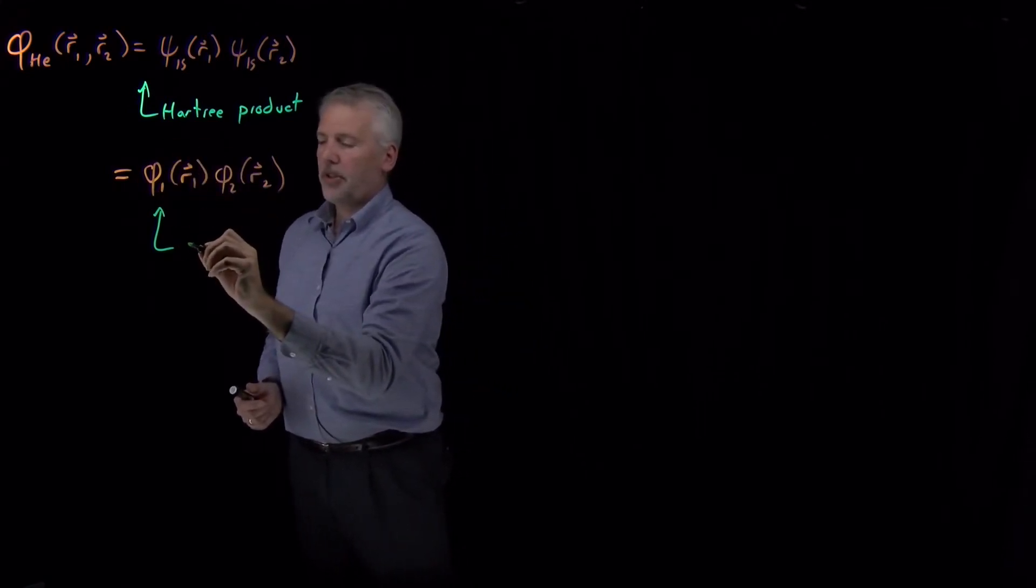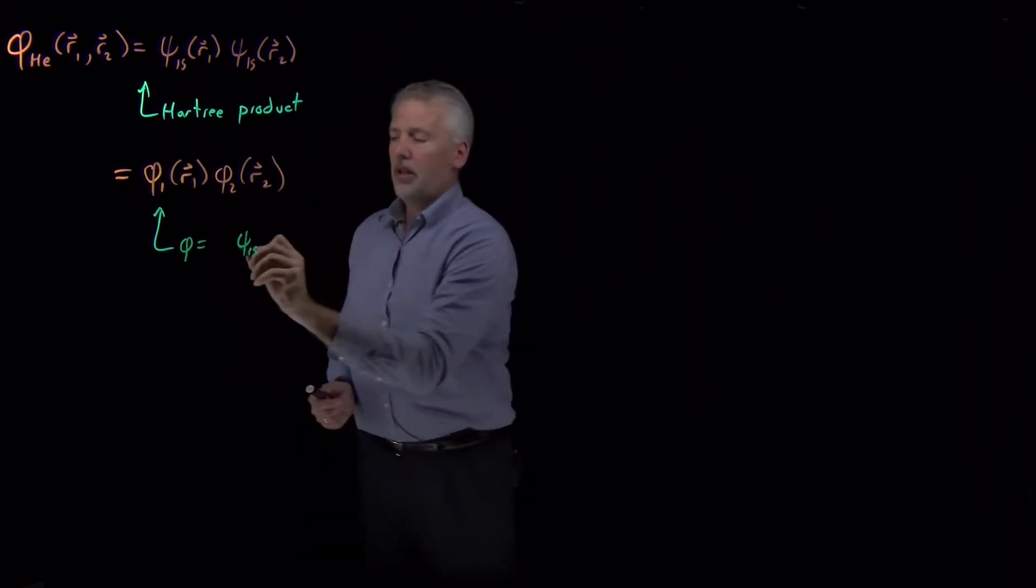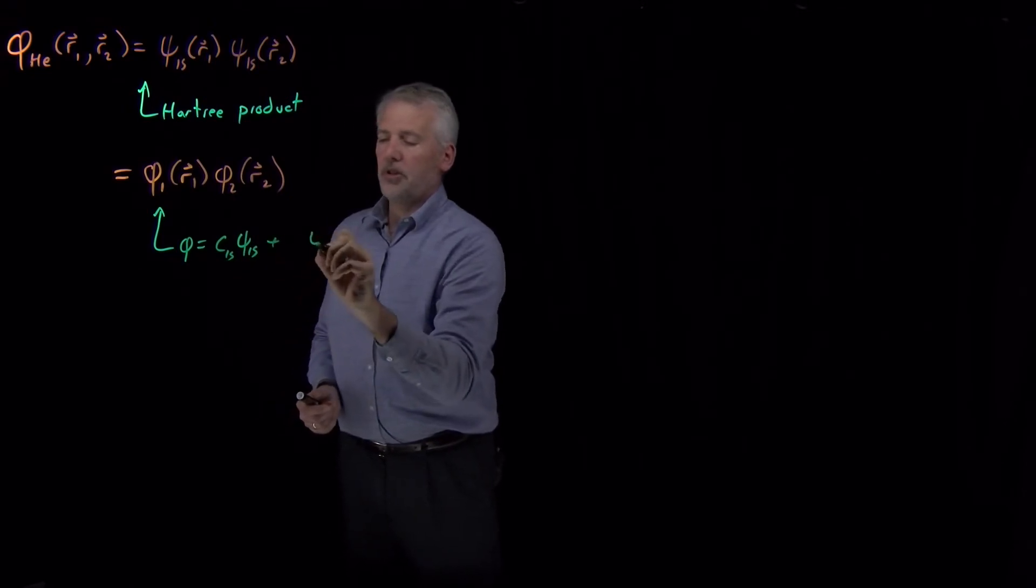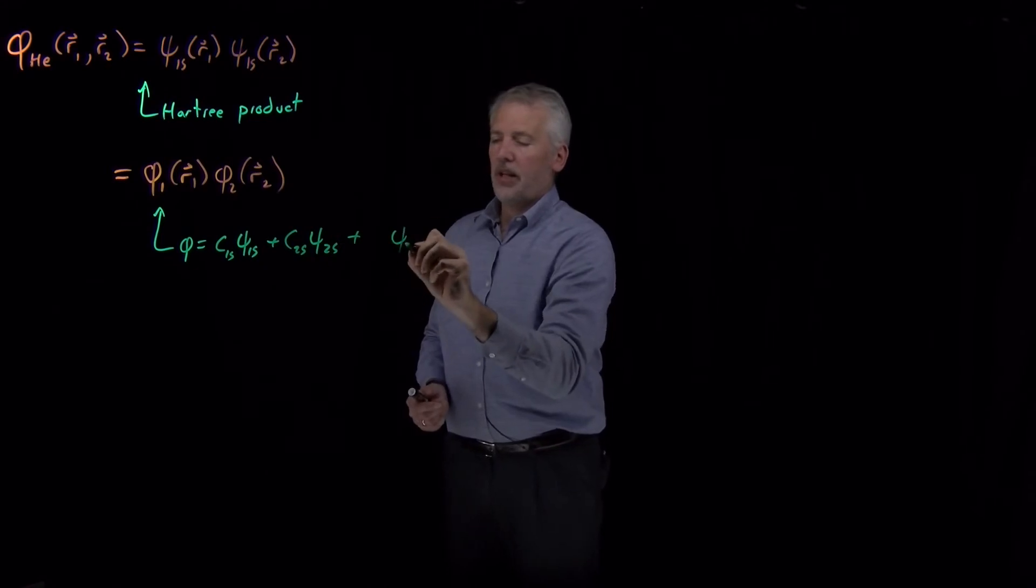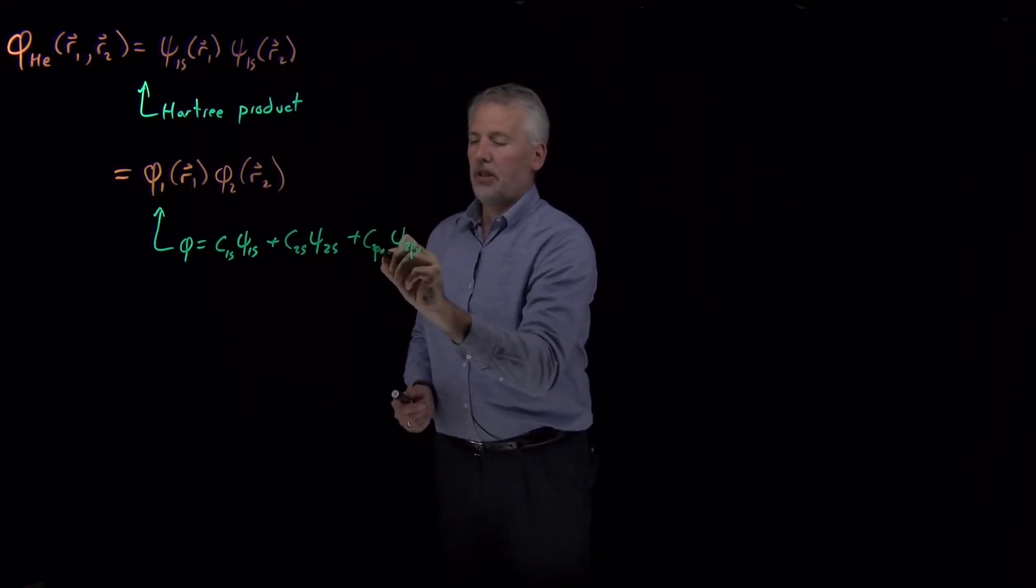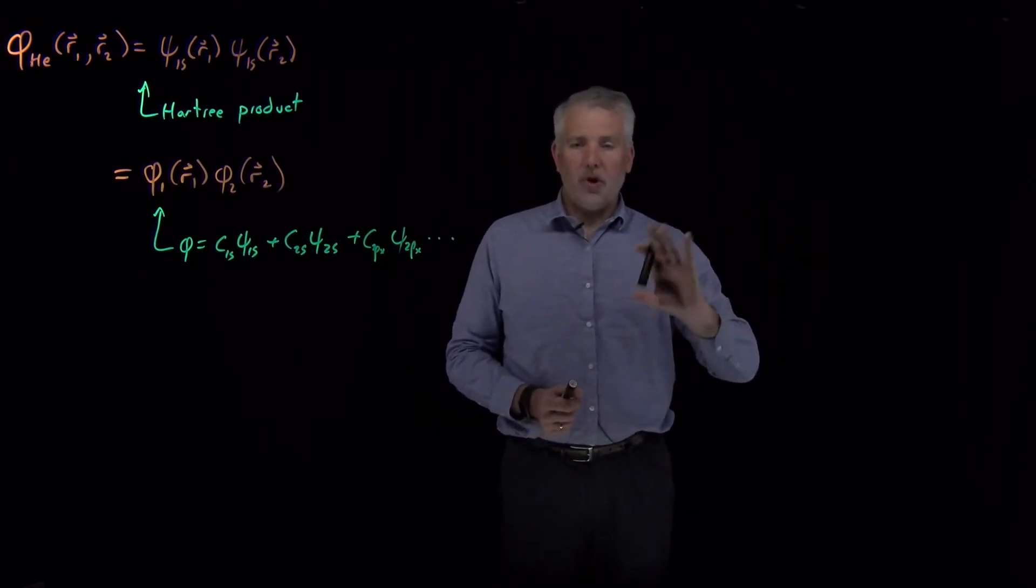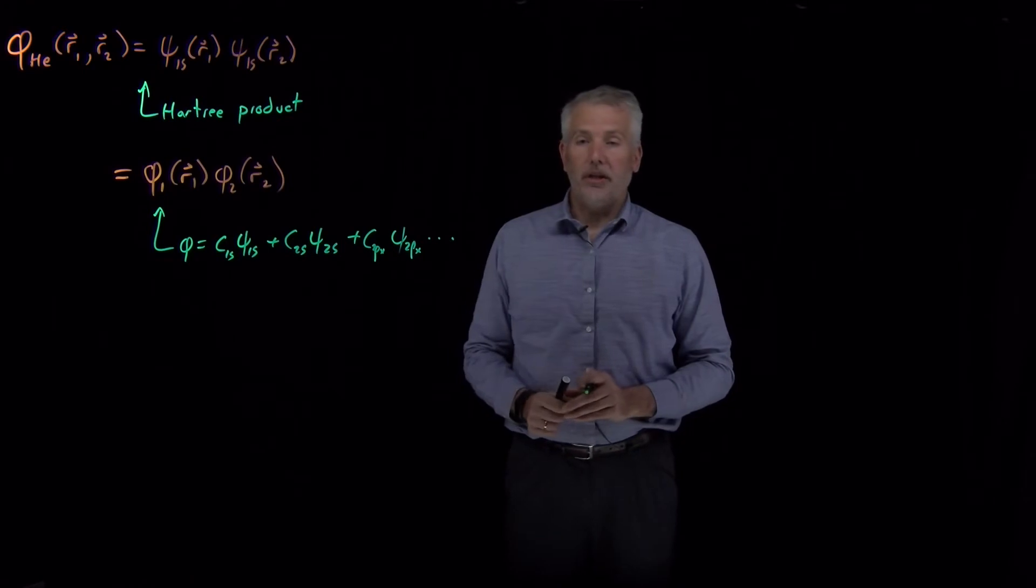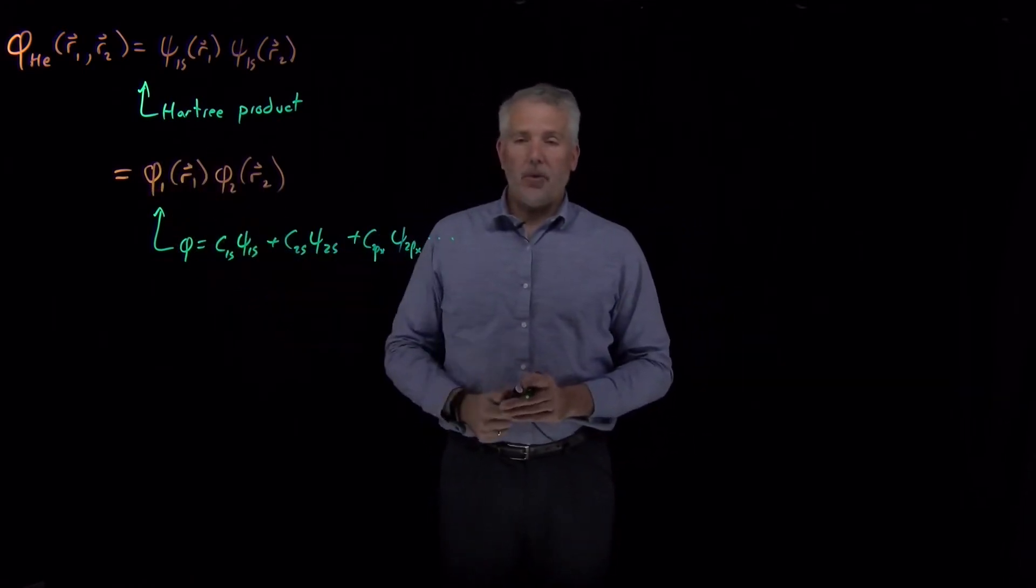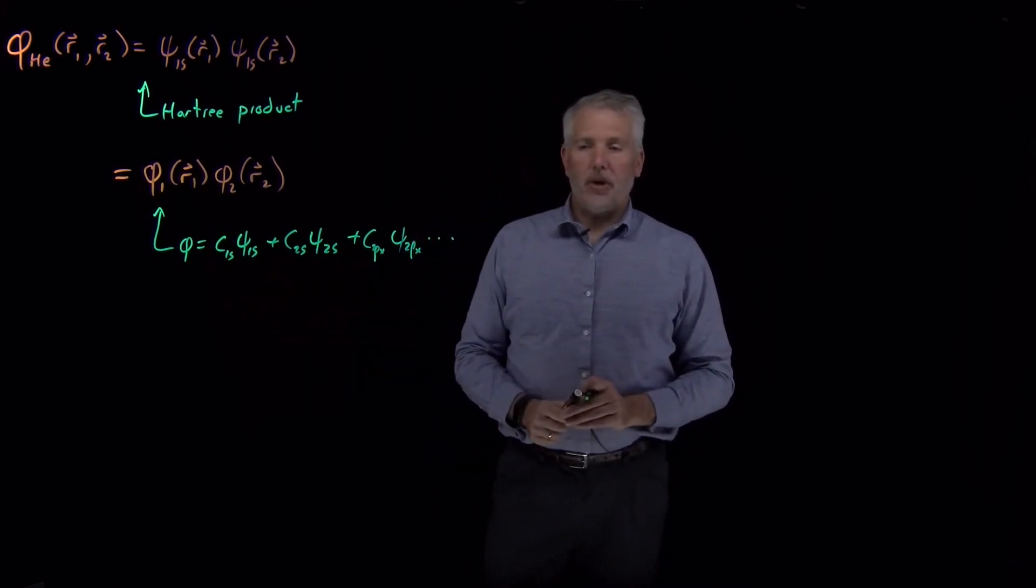I can write that function as the 1s wave function multiplied by some coefficient plus a 2s wave function multiplied by some coefficient, and then I can continue and add a 2px wave function, and as many of those as I care to include. So if I included the full list of all infinite number of the hydrogen wave functions, then I could represent any function I want. The best function to use here, I may not know what it is, but I can write it as a sum, a linear combination of these hydrogen functions.